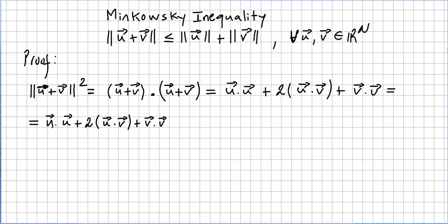But we saw in the previous video that u·u is nothing else but ||u||². And 2 times u·v is nothing else but 2||u||||v||.